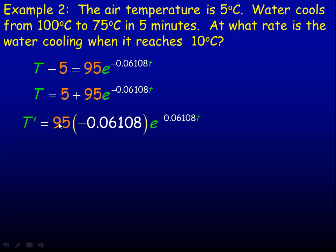T prime equals—well, 5 is a constant, so its derivative is 0. To differentiate the power of E, it's 95 times the derivative. The derivative of the exponent is negative 0.06108, which multiplies by 95, then times the original function. That's the derivative of this temperature-time function.